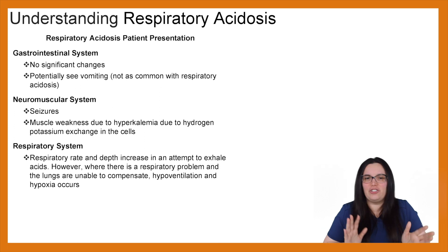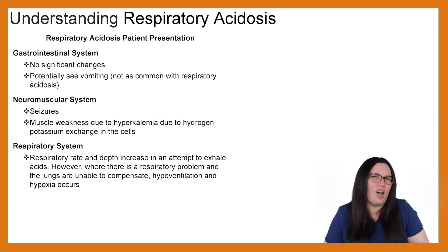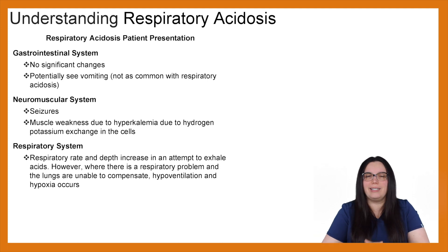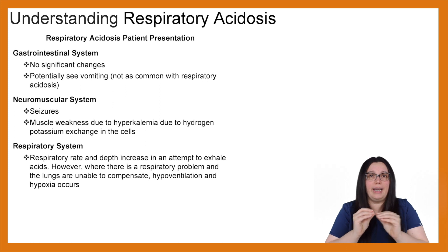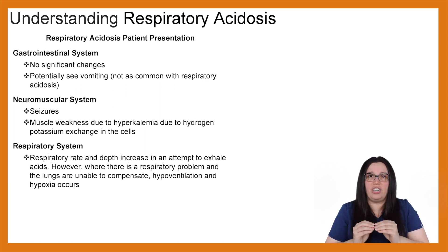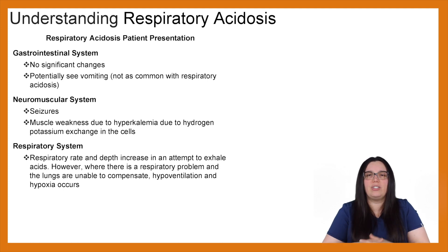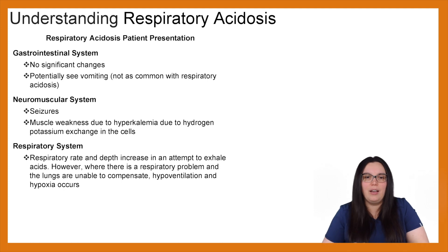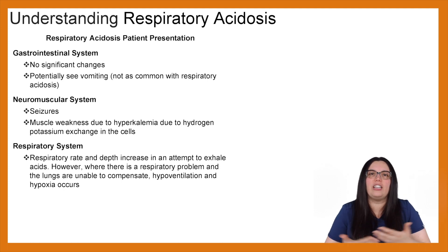When it comes to the gastrointestinal system, you're not going to see a whole bunch of significant changes. You could potentially see vomiting, though it's really not as common in respiratory acidosis. Neuromuscularly, seizures are a huge concern — the brain has a very low tolerance for pH and oxygenation changes — and you could also see muscle weakness due to the hyperkalemia from that hydrogen ion exchange inside the cells.